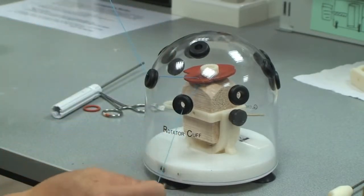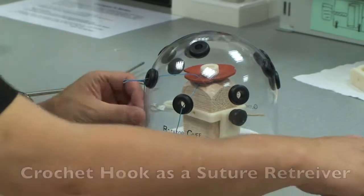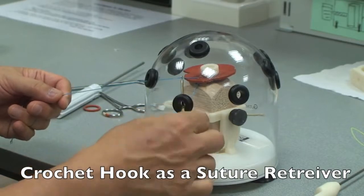So that is through the rotator cuff. And I want to bring the suture back out to the lateral portal with the crochet hook.